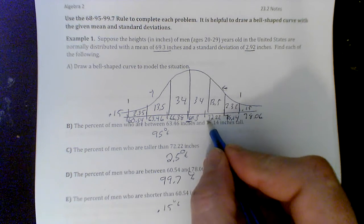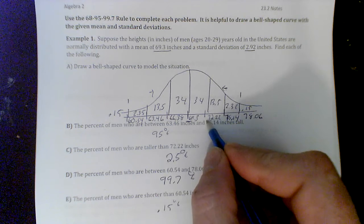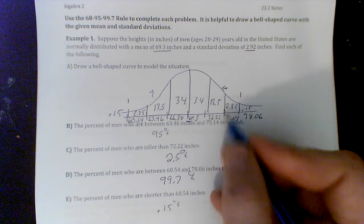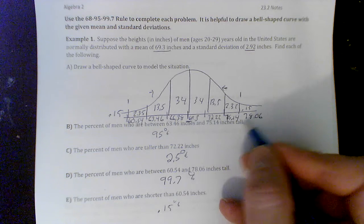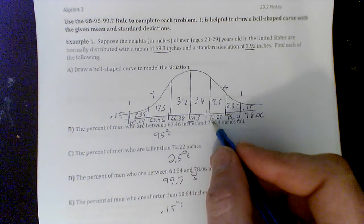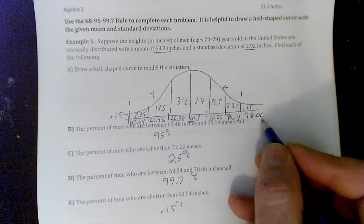And just start adding 2.92 and filling in the first standard deviation above, plus 2.92, second standard deviation above, plus 2.92, third standard deviation above. And we can see all our data. So I went 72.22, 75.14, 78.06.